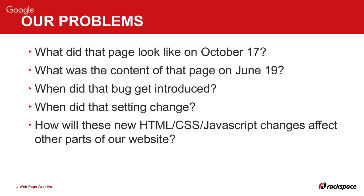I'm going to start with a list of problems that came up in conversations at Rackspace. For instance: what did that page look like on October 17th? What was the content on June 19th? When did that bug get introduced, or when did that setting change? How are new CSS, HTML, or JavaScript changes going to affect the rest of the website — parts we're not expecting changes to happen?